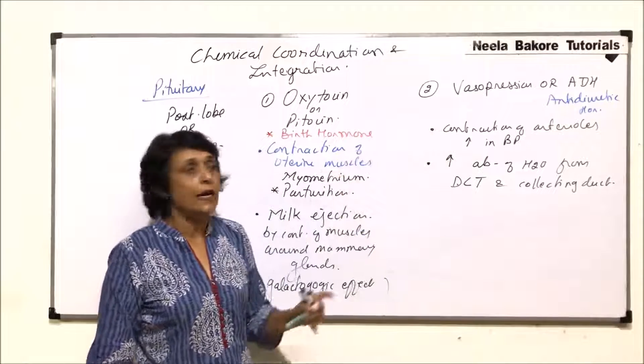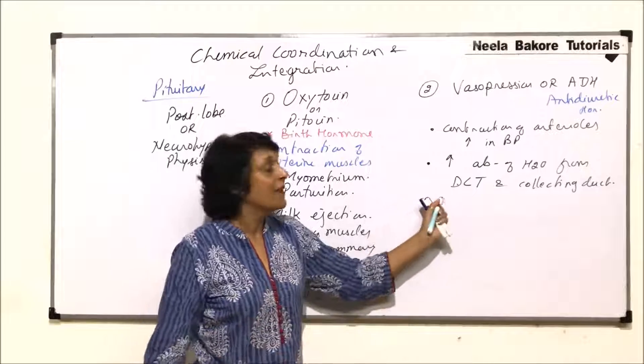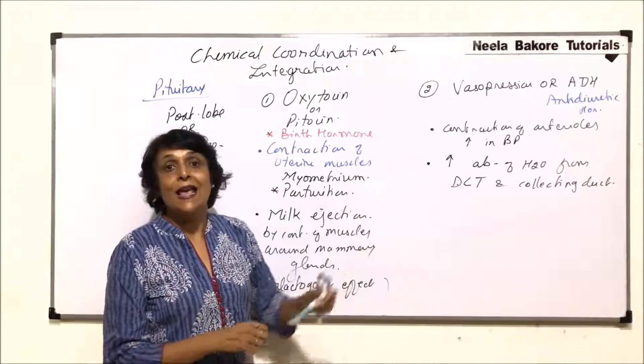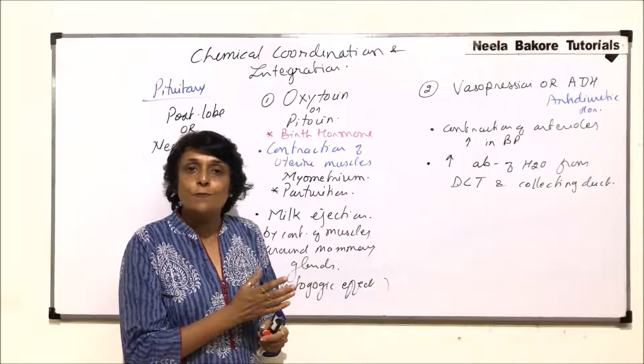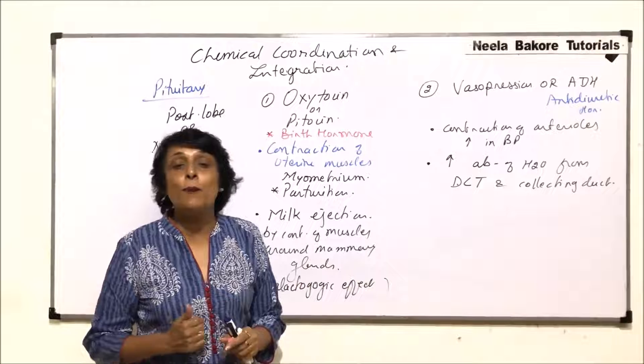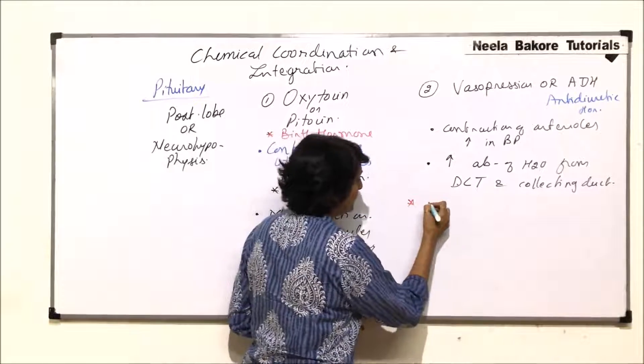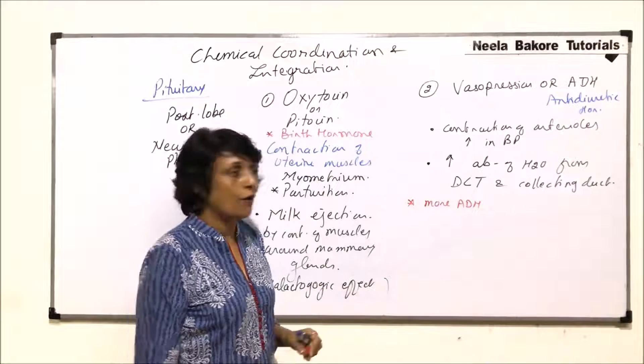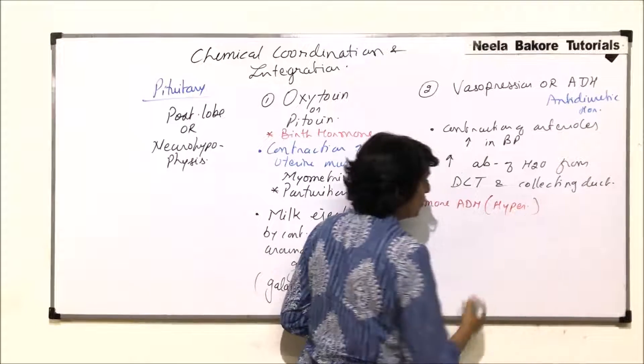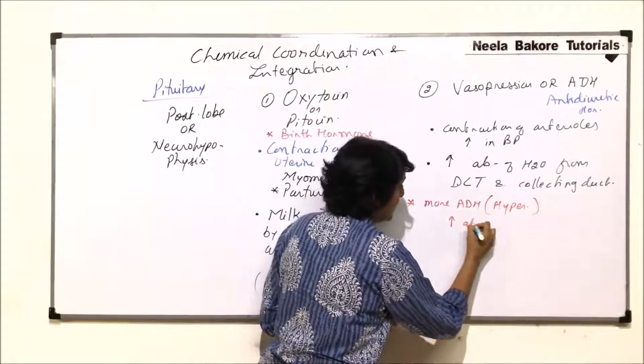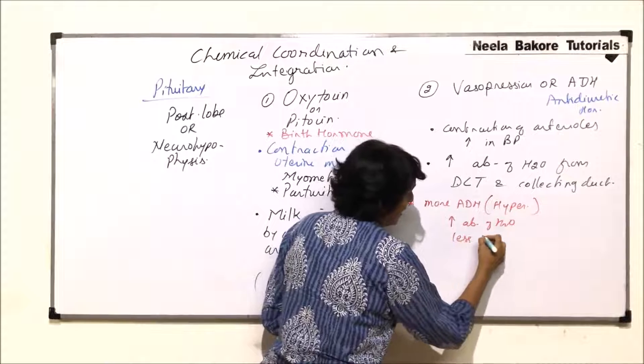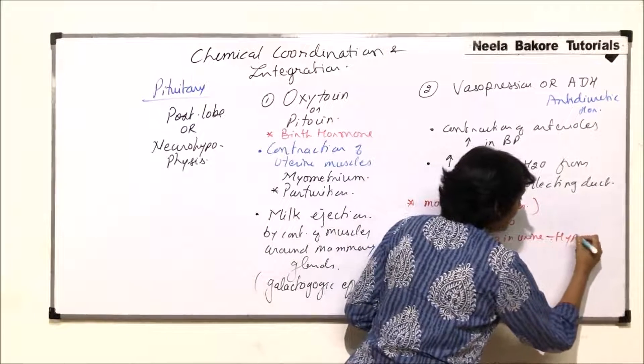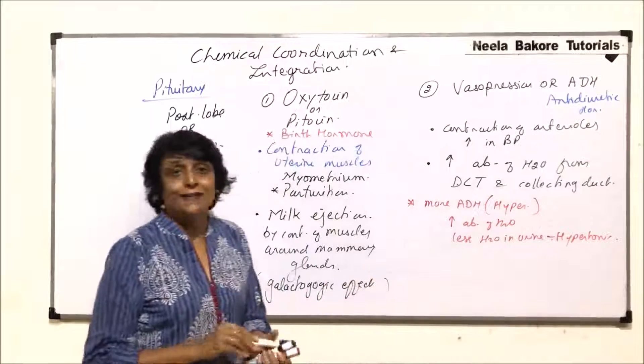This function is basically to regulate the water balance in the body. What would happen if the amount or concentration of ADH is more or less? If ADH is more, then more water will be absorbed and the urine output would be less or hypertonic urine will be excreted. If there is hypersecretion of ADH - increased absorption of water, less water in urine - the urine is going to become hypertonic.